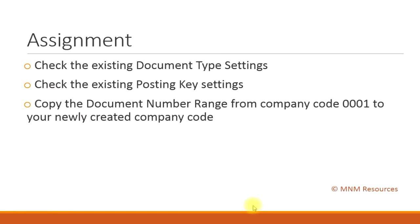For your assignment: check the existing document type settings and the existing posting key settings. Do not make any changes to the existing settings in the system, as the current document types and posting keys are adequate for your document postings. To enable document posting, you must copy the document number range from company code 0001 to your newly created company code. That will allow you to post to all fiscal years.